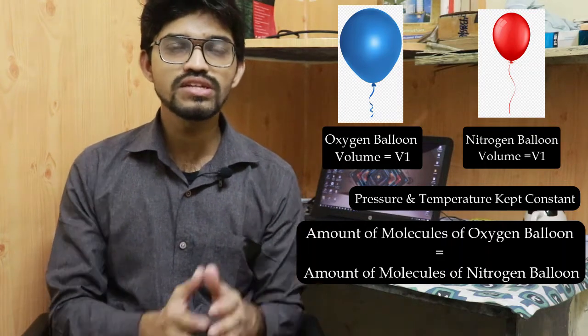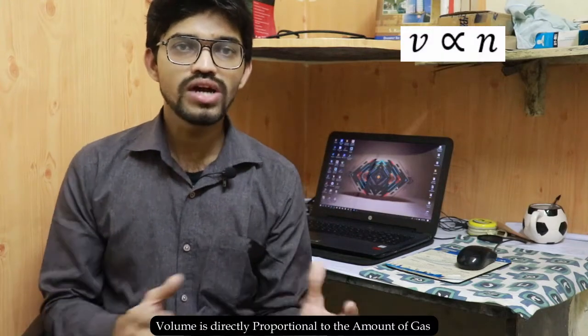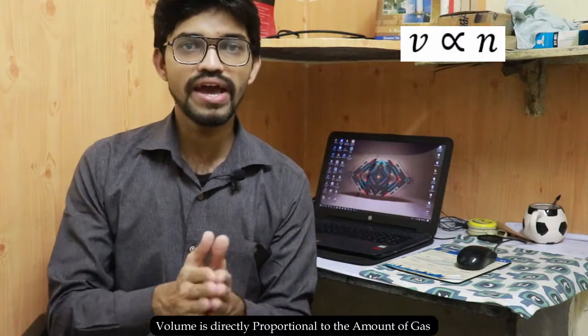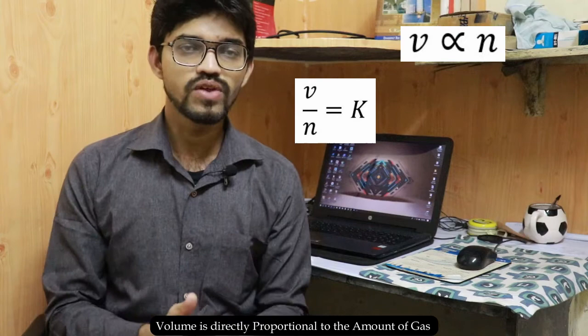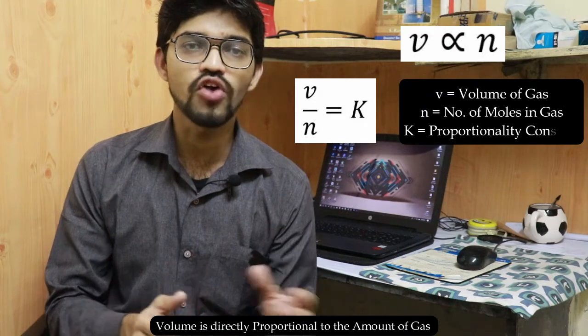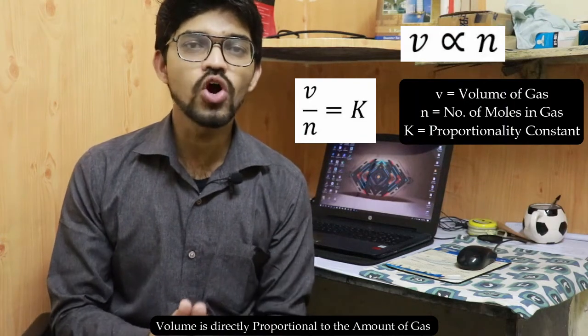Avogadro's hypothesis states that volume is directly proportional to the number of molecules, or the total amount of gas. So V is directly proportional to n, and the mathematical expression becomes V divided by n equals K, where V is the volume, n is the number of moles (or amount of gas), and K is the proportionality constant.